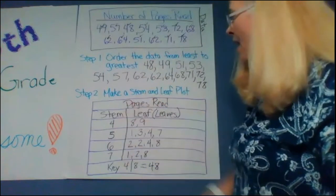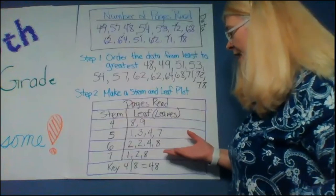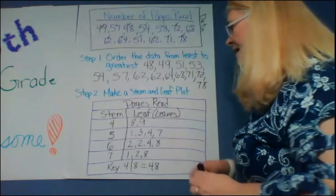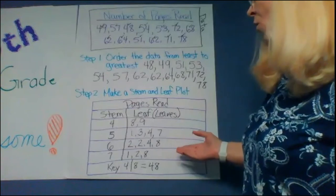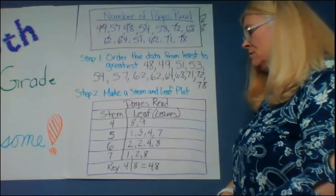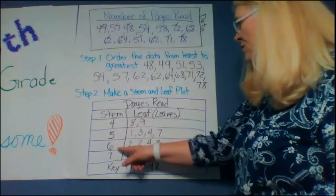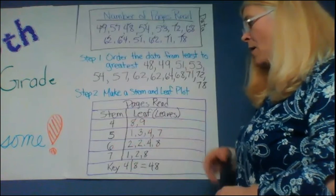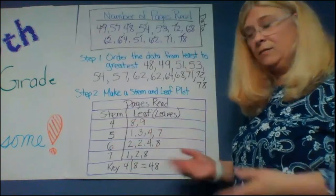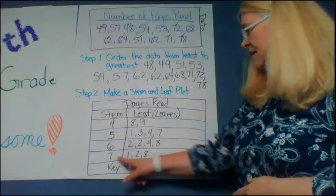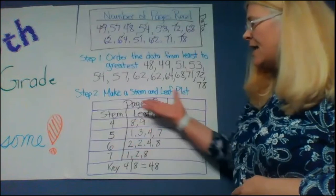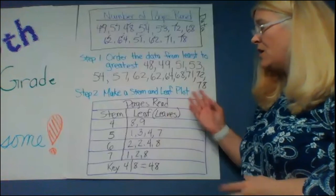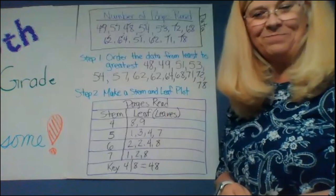Now from my stem and leaf plot, I could answer a lot of different questions like how many students read 62 pages? I could come over here and go, oh, 62 and it's there twice. Two. How many, what was the most number of pages read? Oh, 78. So I can get a lot of different types of information from having a stem and leaf plot. All right.